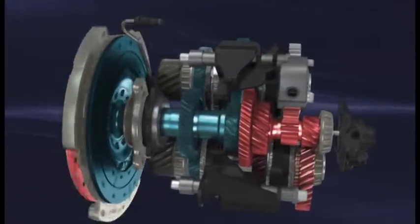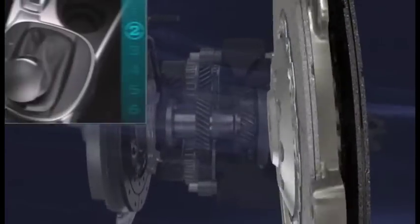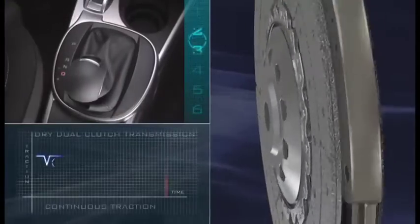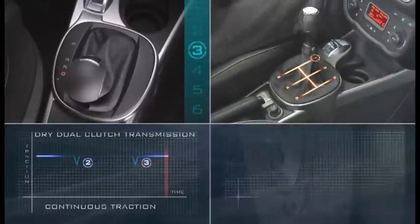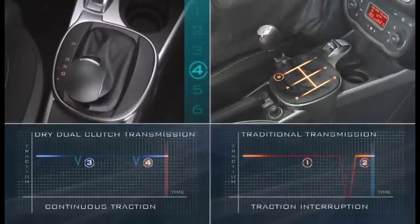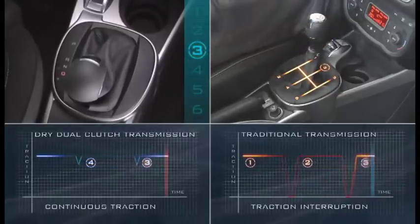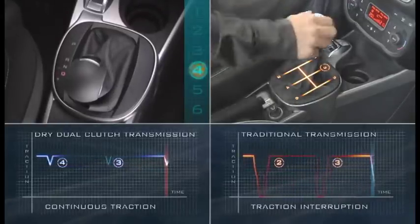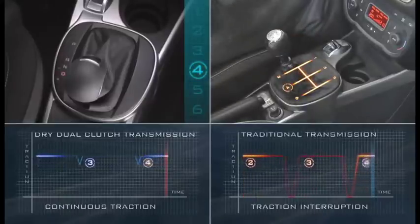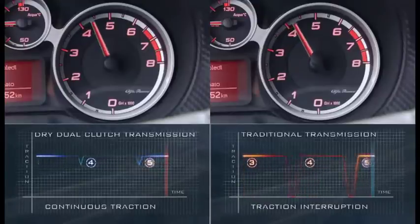Gear shifting is performed automatically by gradual but very rapid switching between the two clutches. Unlike traditional manual or automated transmissions, which momentarily disconnect the engine from the wheels while changing gear with consequent traction interruption, the DDCT keeps traction constant during gear shifting and guarantees excellent power transmission smoothness and efficiency.